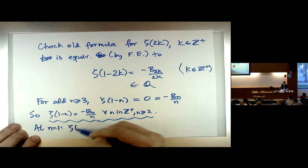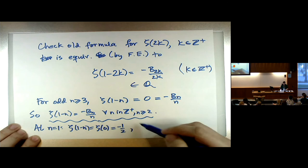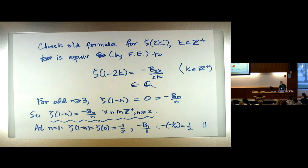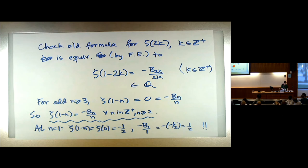For odd n ≥ 3, ζ(1−n) = 0, which equals −B_n/n where B_n is the nth Bernoulli number — and indeed odd-indexed Bernoulli numbers are zero. If we put these together, we have a clean universal formula for ζ(1−n) for all n ≥ 2. At n=1, ζ(0) = −B₁/1. Since B₁ = −1/2 by our convention, that gives ζ(0) = 1/2. This is a reason why some people prefer to set B₁ = +1/2, so that the formula −B_n/n always applies.